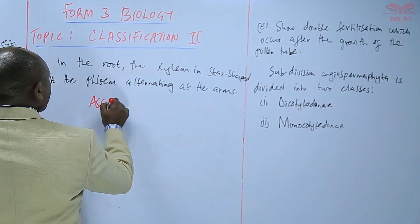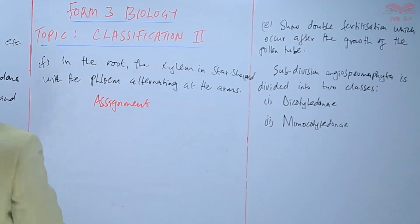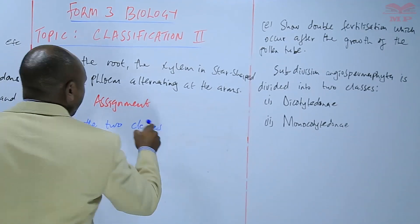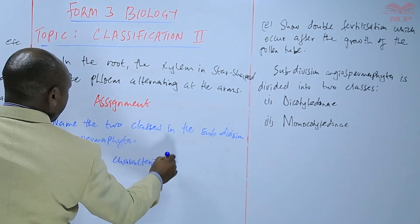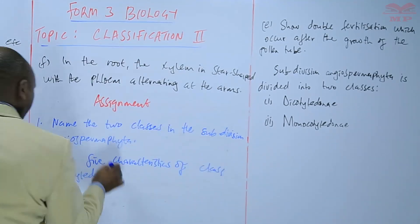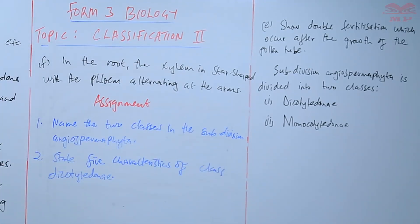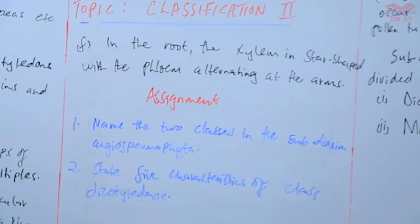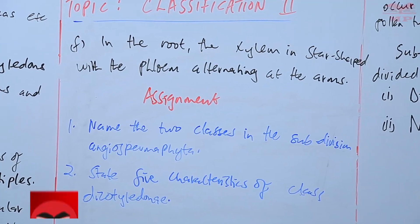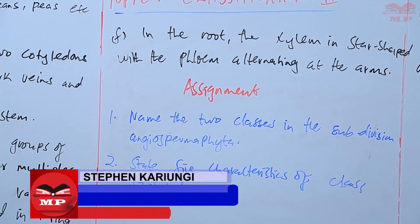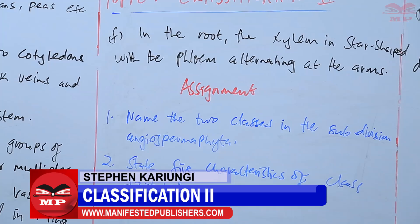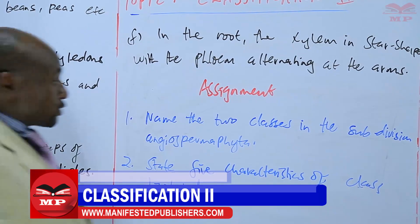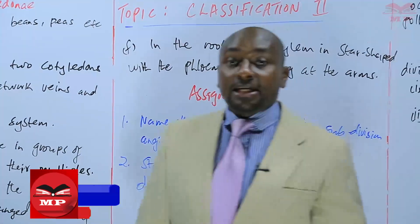The first question: name two classes in the subdivision Angiospermophyta. The second question: state five characteristics of class Dicotyledonae. So we are going to stop there until next time. Goodbye.